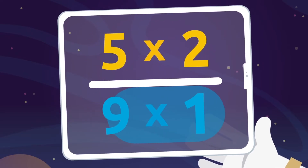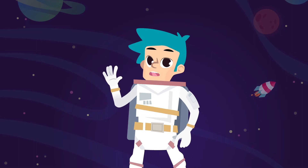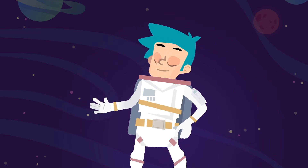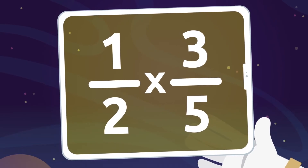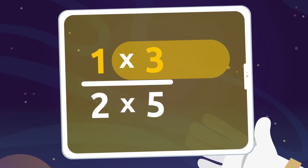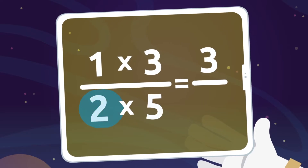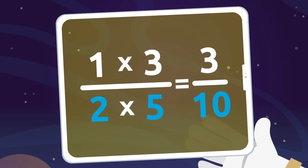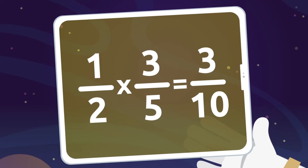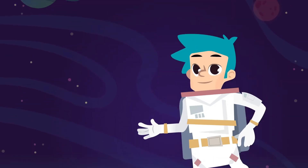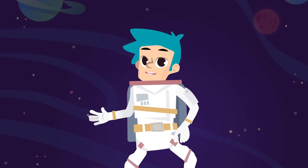Easy, right? Told you! Let's look at an example. We need to multiply one half by three fifths. To do that, we multiply the numerators: one by three, which equals three. Then we multiply the denominators: two by five, which equals ten. So one half multiplied by three fifths equals three tenths. Well done!